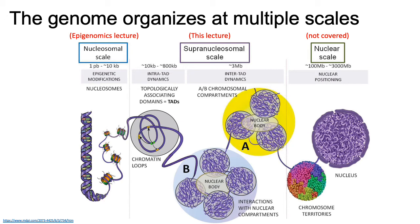At an even higher level than TADs, entire TADs can consist of either regions of the genome that tend to be highly associated with transcriptionally active elements, or regions where most of the TAD is transcriptionally inactive. You can have multiple TADs that group together and interact with each other. Those groups of TADs that are transcriptionally active are called the A compartment, whereas groups of TADs representing transcriptionally inactive regions are called the B compartment.